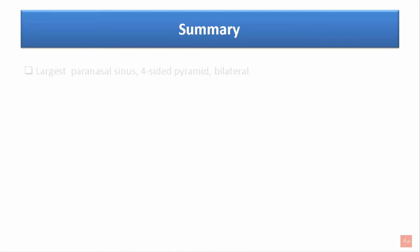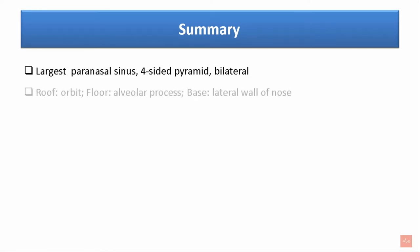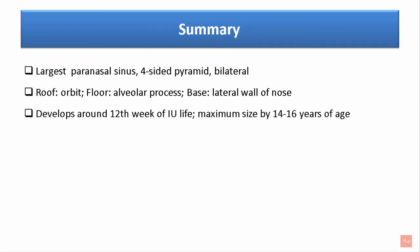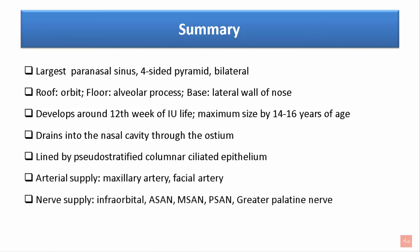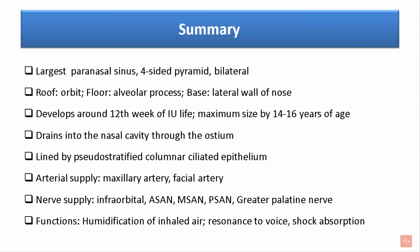To summarize: the maxillary sinus is the largest paranasal sinus and a four-sided pyramid, bilateral in position. The roof is formed by the orbit, the floor by the alveolar process, and the base by the lateral wall of the nose. It develops around the 12th week of intrauterine life and attains maximum size by 14–16 years of age. It drains into the nasal cavity through the ostium and is lined by pseudostratified columnar ciliated epithelium. Arterial supply is through the maxillary and facial arteries. Nerve supply is through the infraorbital, anterior, middle, and posterior superior alveolar nerves, and the greater palatine nerve. It helps in humidification of inhaled air, adds resonance to the voice, and helps in shock absorption.